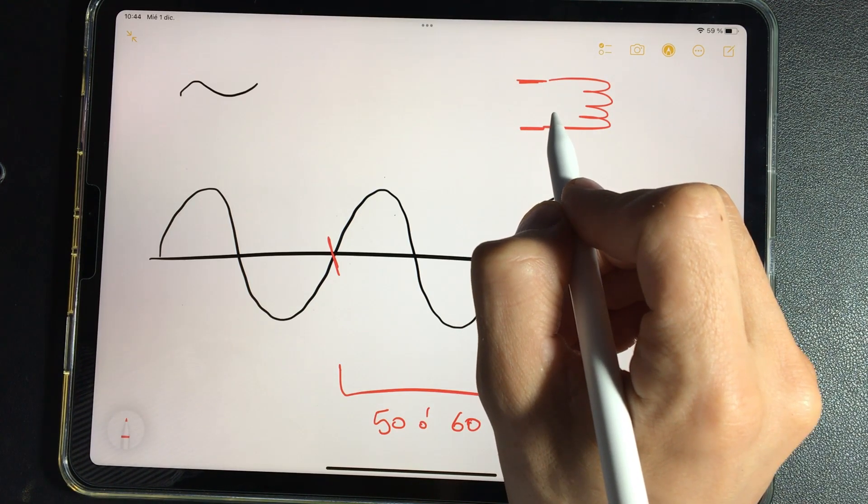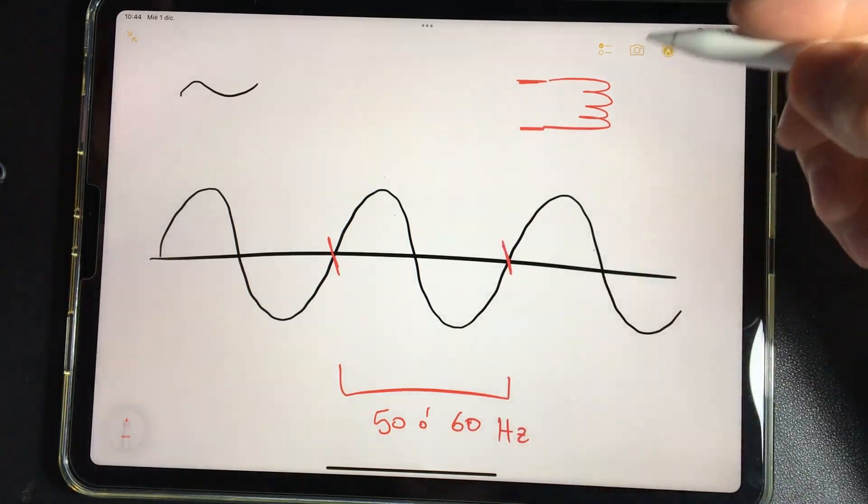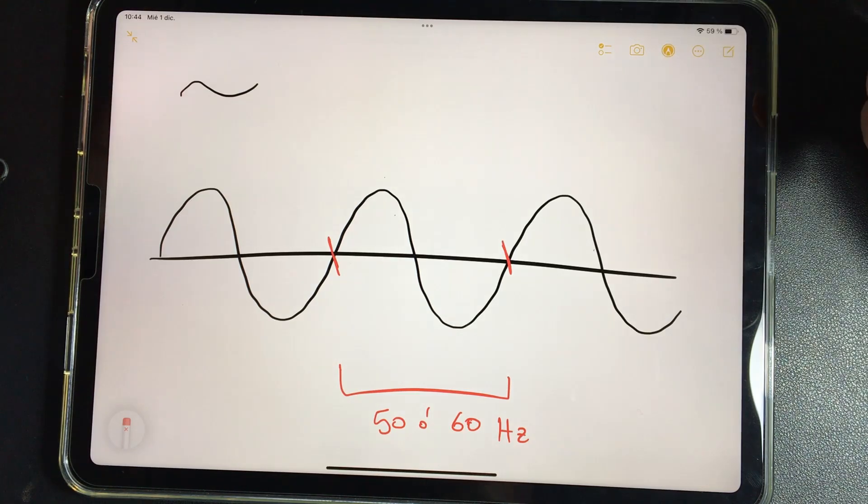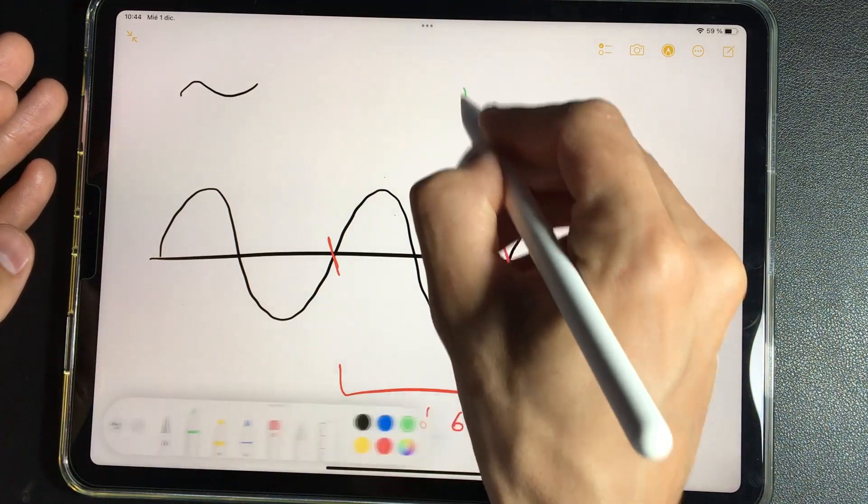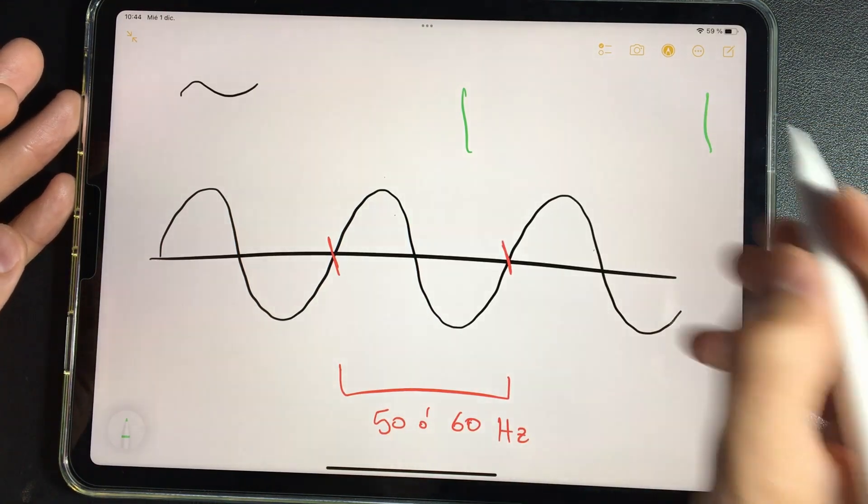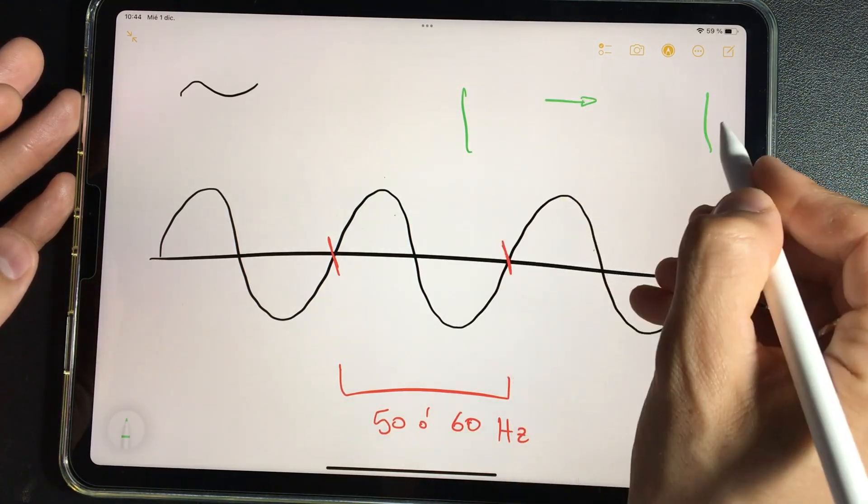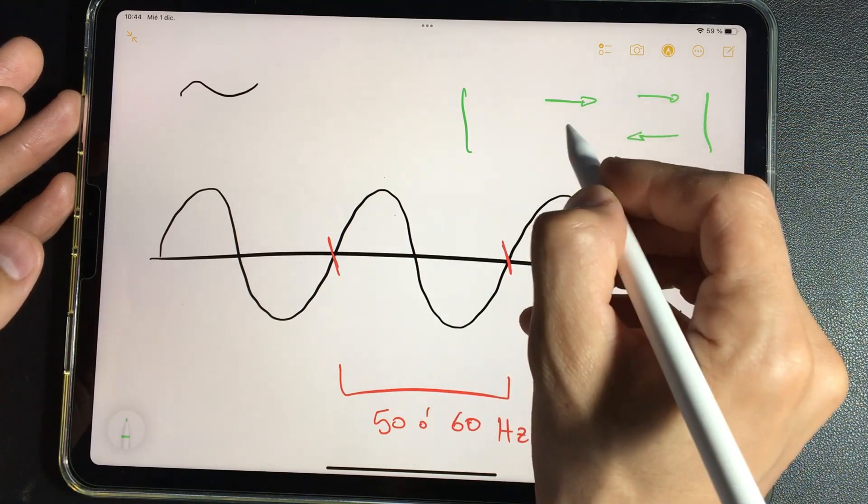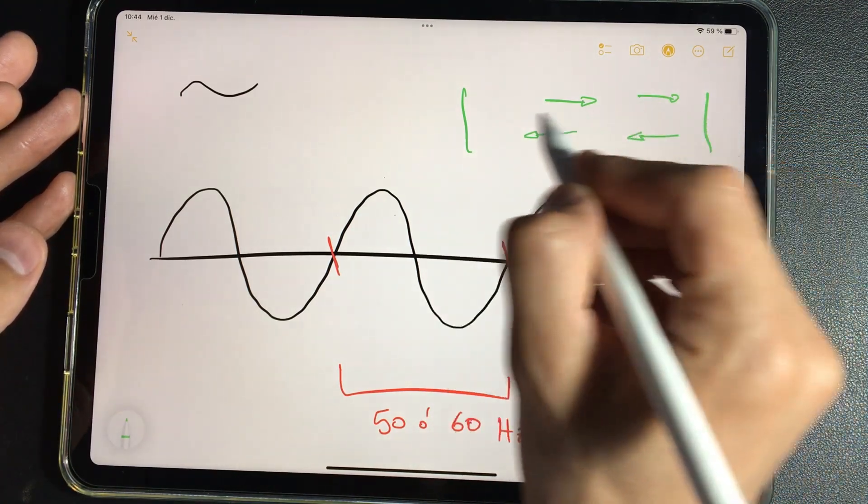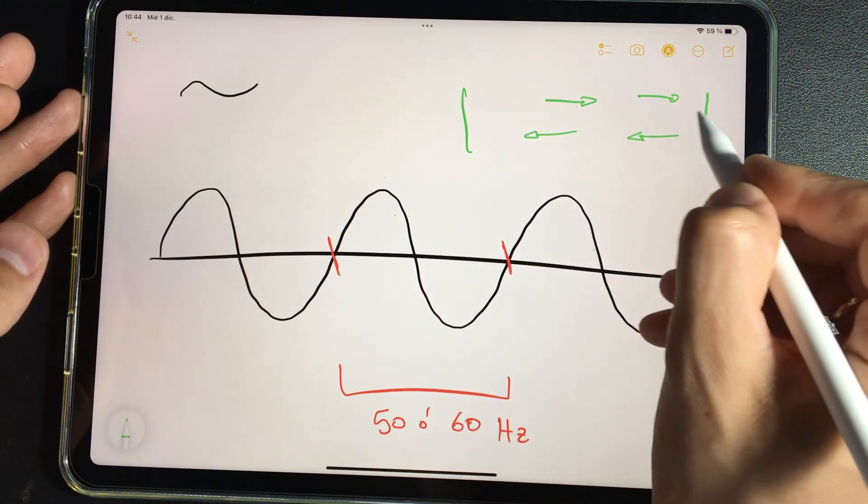To better understand it, we can compare it to the circulation of a car. Imagine that we are with a car moving from one wall to another. So we go to one side, we arrive here, we reverse gear and go to the other. And we constantly do this, putting it in reverse and first, reverse and first.